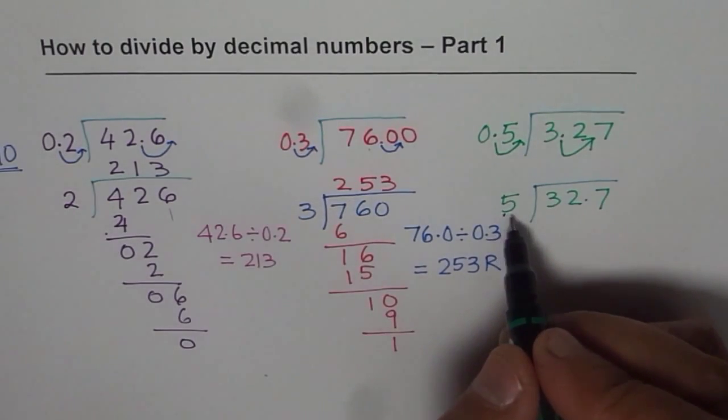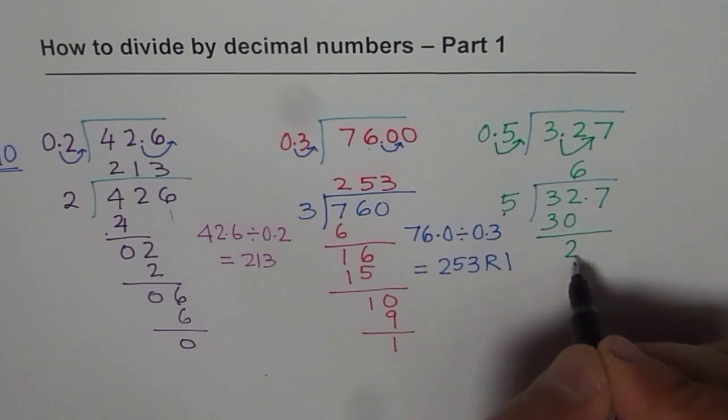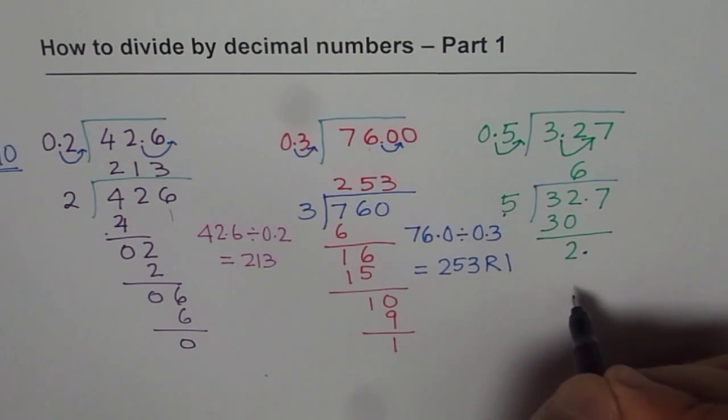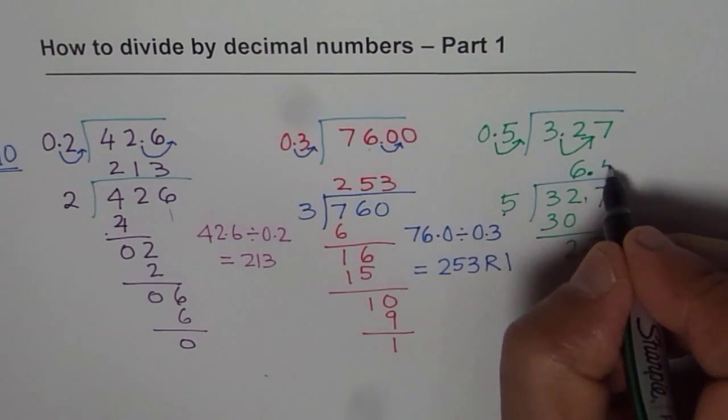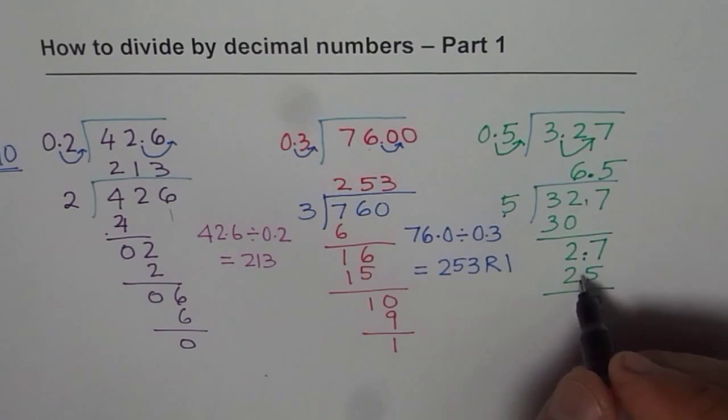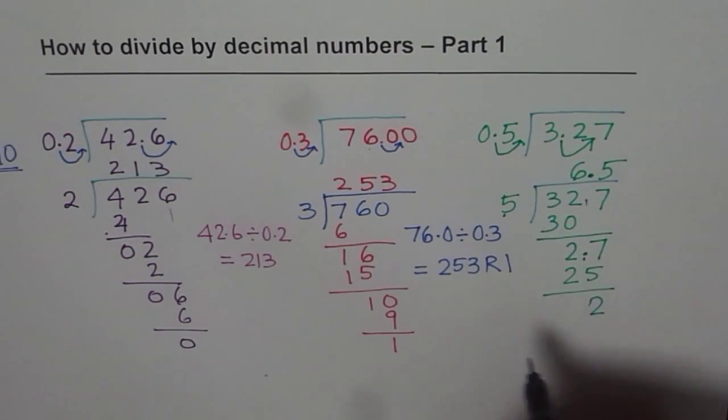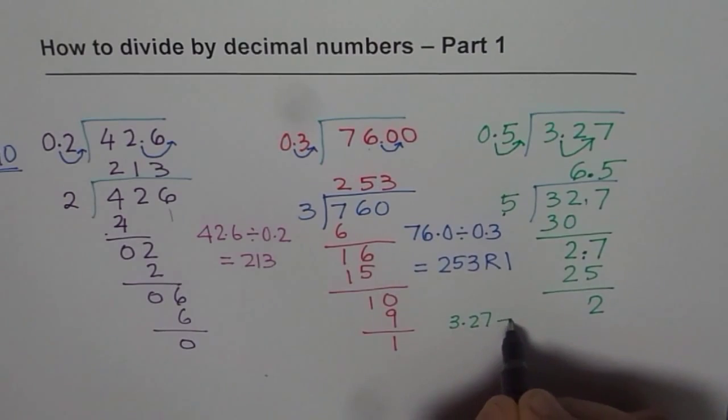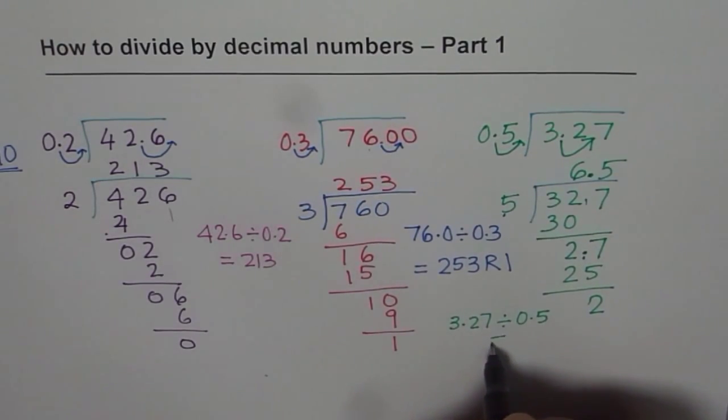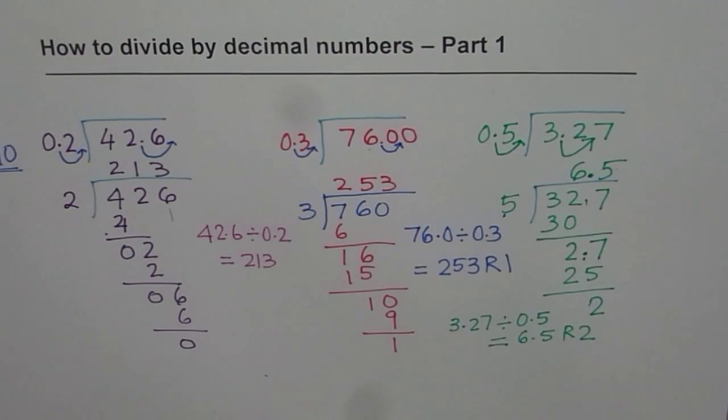So let's divide. 5 times 6 is 30. When you take away, you get 2. Now bring down decimal. As soon as you bring down decimal in the quotient, write decimal, and then bring down the next number which is 7. You need to divide 27 by 5. 5 goes 5 times, which is 25, and the remainder is 2. Don't bother about decimal in these cases. Only decimal will be in your answer, the quotient. So remainder is 2. So what do you get as your answer? So we get 3.27 divided by 0.5 is equal to 6.5 remainder 2. So that is how you can divide.